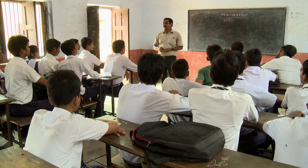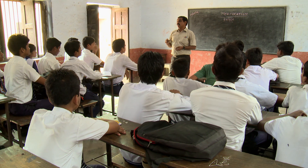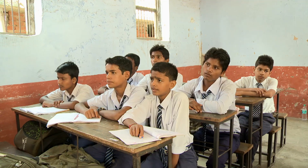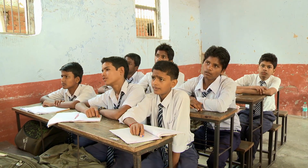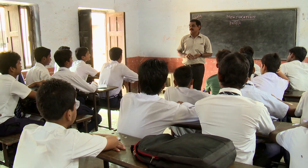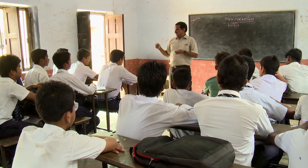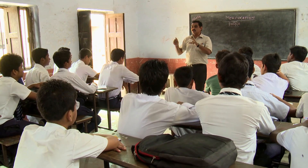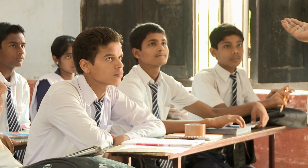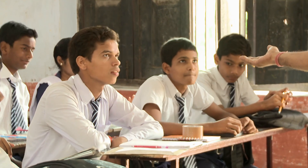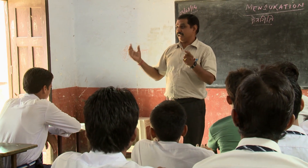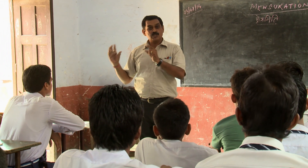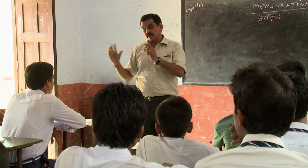In this secondary maths class, the teacher asks his students to perform role plays that show how the maths they have learnt relates to everyday life. The class are consolidating what they have learnt previously about surface area and the volume of solid shapes. The teacher asks group one to start the lesson by presenting their play to show the relationship between the volume of a cone and a cylinder.